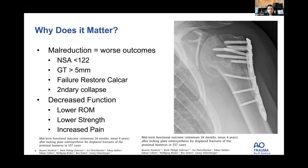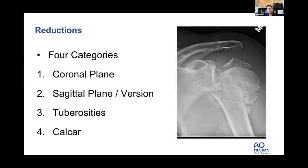Studies looking at malreduction have found guidelines: neck-shaft angle under 122 degrees, greater tuberosity displacement more than 5 mm, failure to restore the medial calcar, and secondary collapse — all lead to decreased range of motion, decreased strength, increased pain, and higher risk of revision. The four categories I evaluate are coronal plane reduction, sagittal plane reduction including version, tuberosity reduction, and calcar reduction.